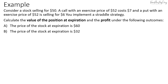Let's consider a stock selling for $50. There's a call option with an exercise price of $52 that costs $7, and a put option with an exercise price of $52 as well that's selling for $6. If you implement a straddle strategy, calculate the value of the position at expiration and the profit if the price of the stock is $60 and $32.